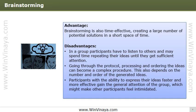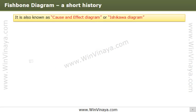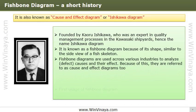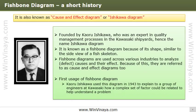Let's discuss a short history of the fishbone diagram. Kaoru Ishikawa, a Japanese engineer, proposed this technique, hence it is also called the Ishikawa diagram. He used it in 1943 to explain to a group of engineers at Kawasaki how a complex set of factors could be related to help understand a problem. It is called the fishbone diagram because of its shape, which is similar to the side view of a fish skeleton.